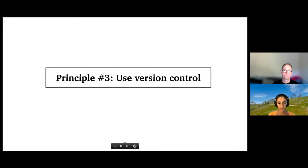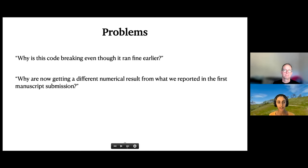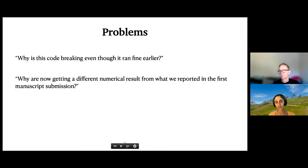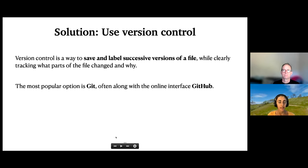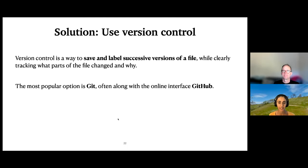The third principle is to use version control. Common headaches: you go to rerun your code and it's breaking with a cryptic error message — you're sure the code ran fine earlier, what could have happened? Or you rerun the code and get a different numerical result from what you reported before. Something changed, but you're not sure what. Version control is a way to save and label successive versions of a file in a clearly traceable way — a much more sophisticated version of saving files as v1, v2, v3.